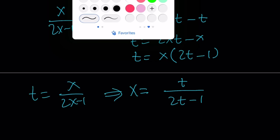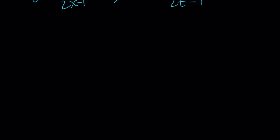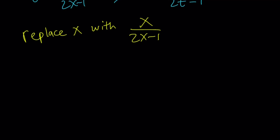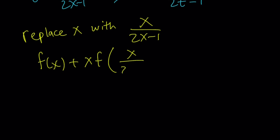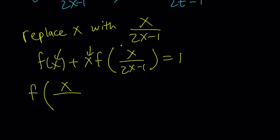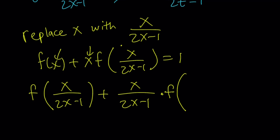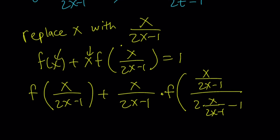We want to stick with f of x and solve using the same variable — it doesn't matter which variable you use since you can always swap x and t. So I'm going to replace x with x over 2x minus 1, and you can easily check that the inverse of this function is itself. My original equation was f of x plus x times f of x over 2x minus 1 equals 1. Now I'm going to replace x with x over 2x minus 1 everywhere — here, here, and here. You get f of x over 2x minus 1 plus x over 2x minus 1 multiplied by f of — now that's a complicated expression, replacing x with x over 2x minus 1 — 2 times x over 2x minus 1 minus 1. And the whole thing equals 1.